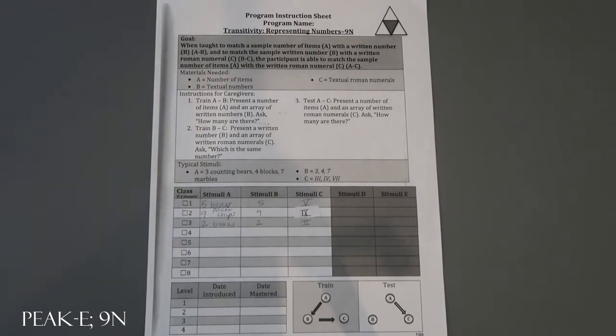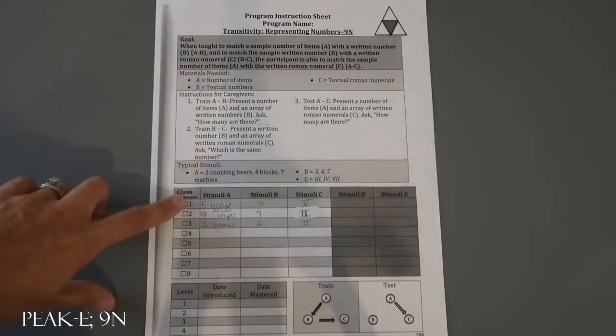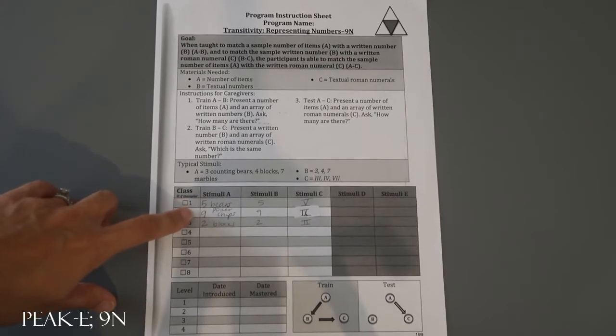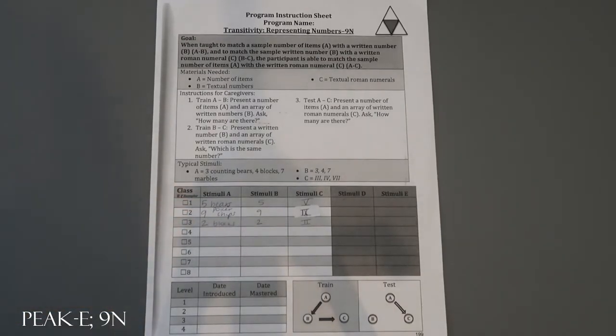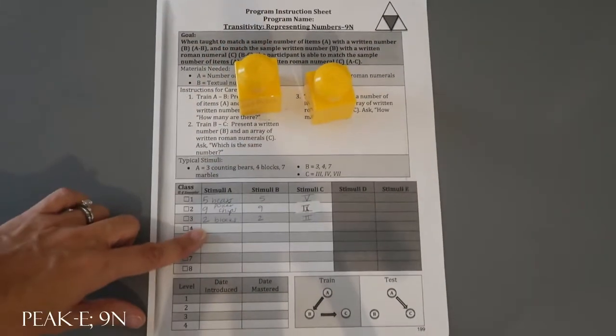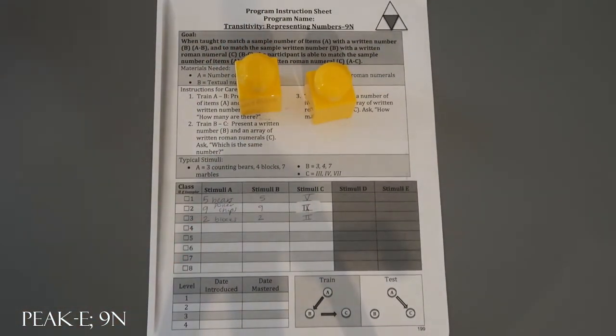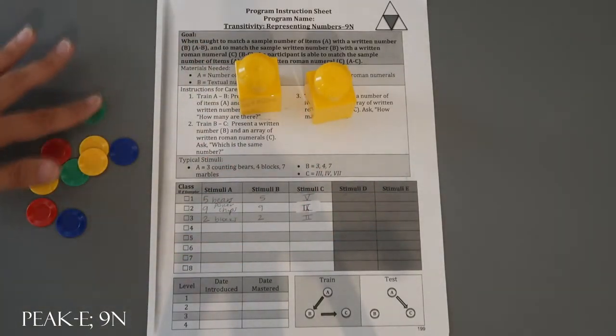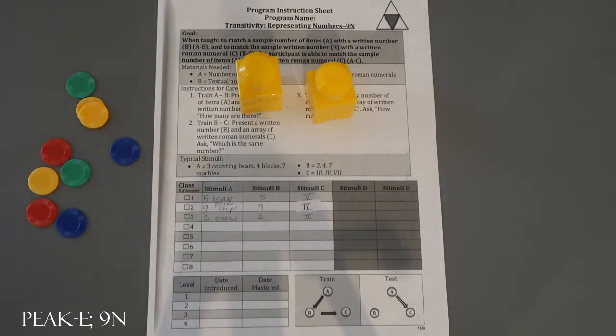For train A to B, you're going to be presenting a number of items and an array of written numbers. For example, for stimuli A you're going to have five bears, nine poker chips, or two blocks. We have two mega blocks for class three, five bears for class one, and these poker chips, nine of them, for class two.